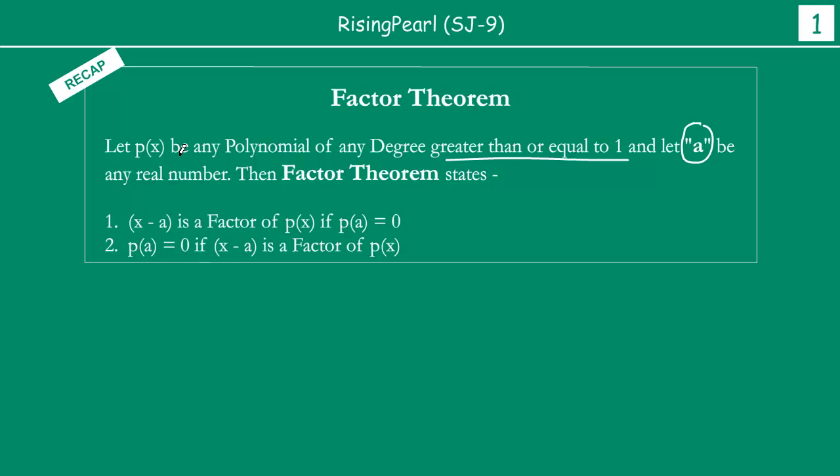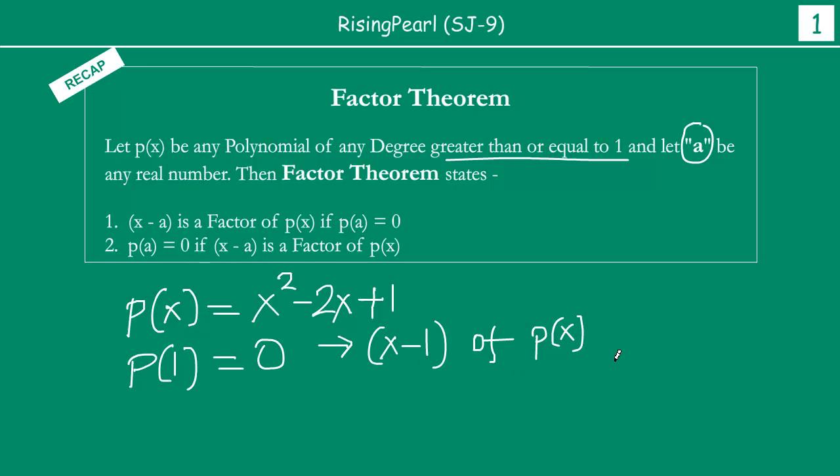So basically what it means is, let us write a polynomial. So suppose we write something as p(x) equal to x squared minus 2x plus 1. If in this particular example p(1) is equal to 0, and if you find the value of polynomial p at x equal to 1, you'll notice this will be indeed equal to 0. So Factor Theorem states that if p(a) is 0, then x minus a, or in this case 1, is a factor of p(x).